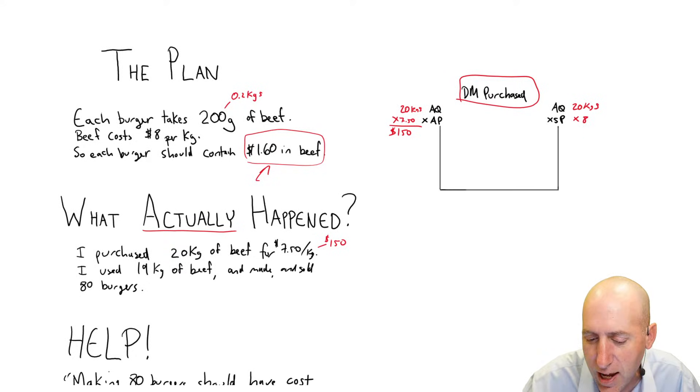He would have said, well, it would cost 20 times 8, because that's his cost per kilogram, he thinks beef costs $8 a kilogram, according to his plan. So 20 times 8 is $160.